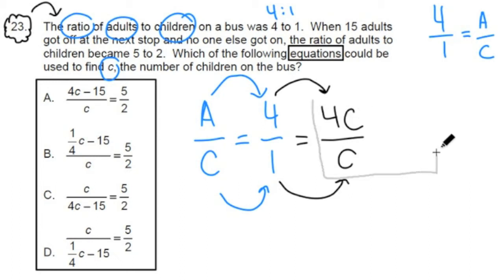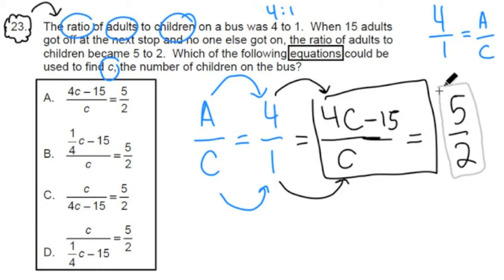Now what do we do to that first bus? Well, there's a stop and 15 adults get off. So now we have 4C minus 15 over C and that's going to be equivalent to 5 over 2. So now this thing right here in the box, this represents how many adults and children are on that bus after the second stop and that's equivalent to a new ratio of 5 to 2.